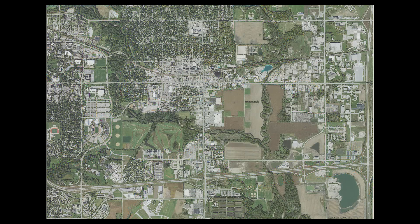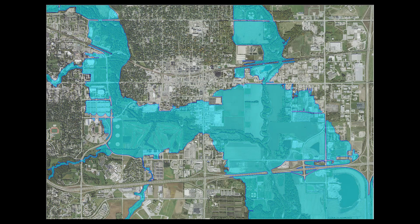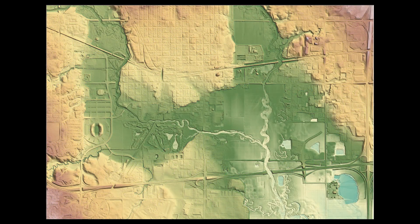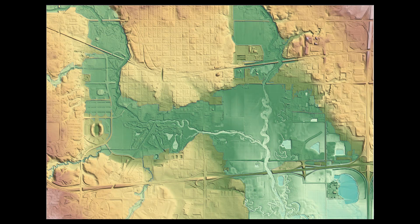It is best practice to make the lateral extents slightly larger than the highest inundation limits. If a previous flood study has been conducted for your project area, the floodplain limits can be used to help guide the location of the lateral extents. Also, viewing colored surfaces of the terrain data can be helpful for locating topographical features of floodplains.